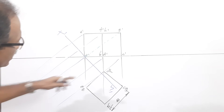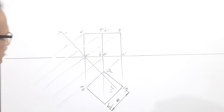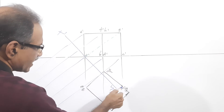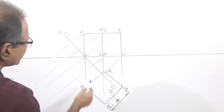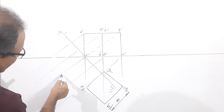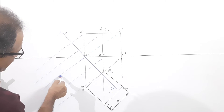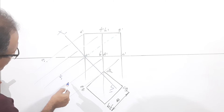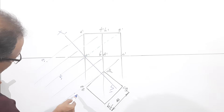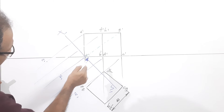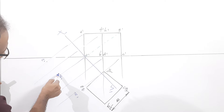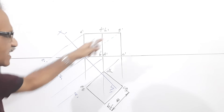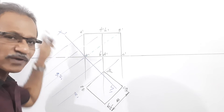I have drawn projectors through four points. A, as well as E, C, and G — all four points are this much below xy. Take that distance and mark it off on the projector through a-dash. I get a1, e1, c1, and g1. The projector through g-dash will pass through a-dash because AG is a solid diagonal kept perpendicular to HP, and x1y1 is perpendicular to that.